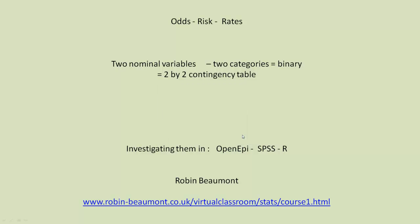Hi, it's Robin here. We're talking about odds, risk, and rates. Looking at two nominal variables, each of which have two categories. So they're called binary variables, and they form a 2 by 2 contingency table.